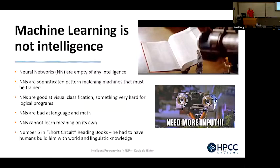Machine learning really isn't intelligence. It's more of an empty intelligence where we can get it to develop sophisticated pattern matching that must be trained. They are good at visual classification, which is very hard in logical programming — the area that does spectacularly is in the vision area. And they are not good at language and math — kind of funny because neither is the human brain. And it cannot learn meaning on its own.